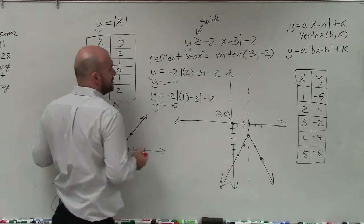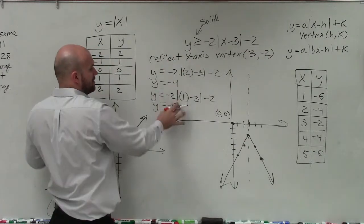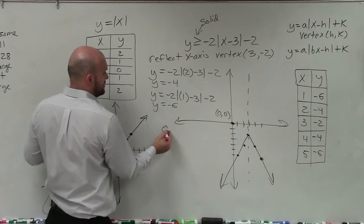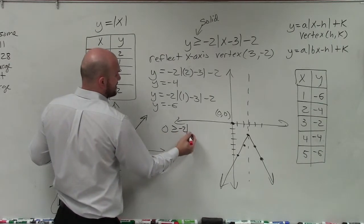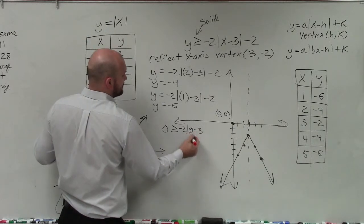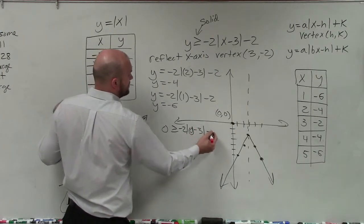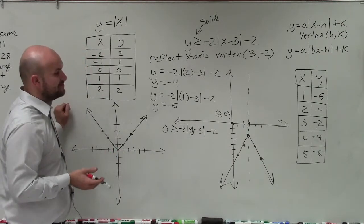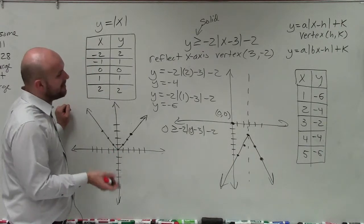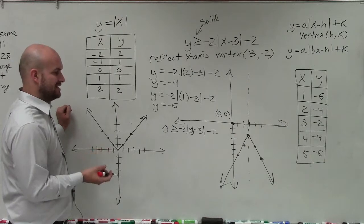So to test this, all we're simply going to do is plug 0 in for 0 into our inequality. Don't worry about the equation. Plug it into your inequality to determine if it's going to be true or not. So I have negative 2 times 0 minus 3, parentheses around it, absolute value minus 2. 0 minus 3 is negative 3. Absolute value of negative 3 is positive 3. Positive 3 times negative 2 is negative 6.